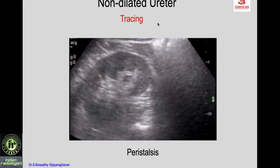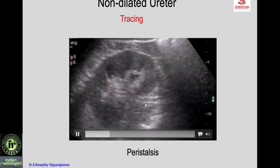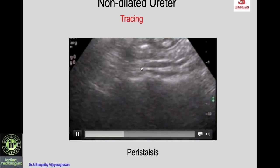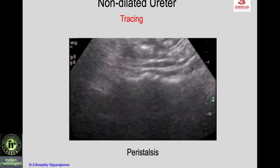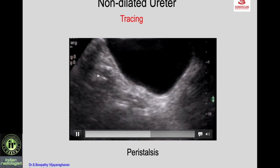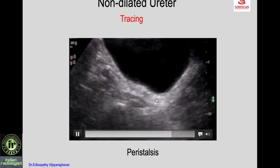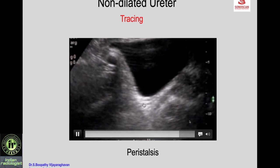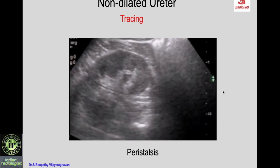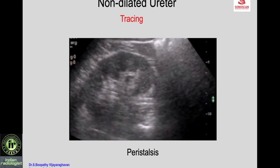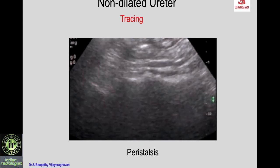Here you see a non-dilated ureter — the upper part. To identify the ureter by peristalsis, you will see the ureter emptying and collapsing. Similarly, the mid ureter collapses, confirming by peristalsis that you are definitely seeing the ureter. You see the lower ureter filling up and then collapsing. Putting on color Doppler allows you to see the jet which follows the collapsing of the distal-most ureter. This is how you trace the non-dilated ureter, confirmed by peristalsis.